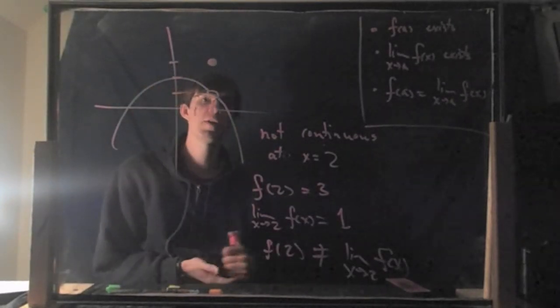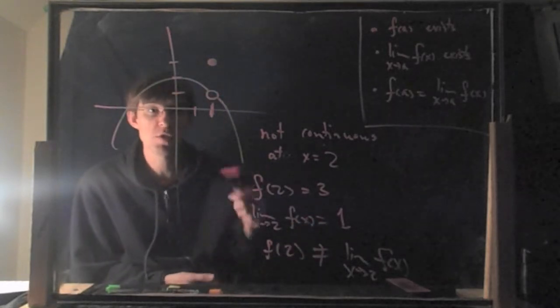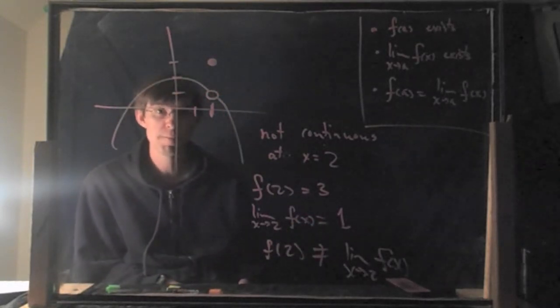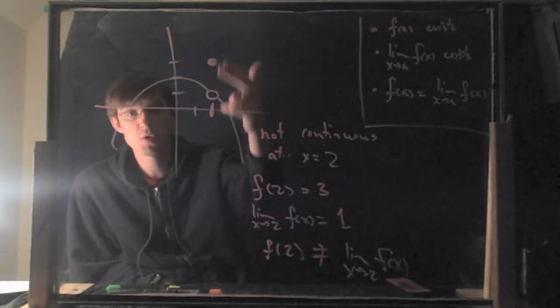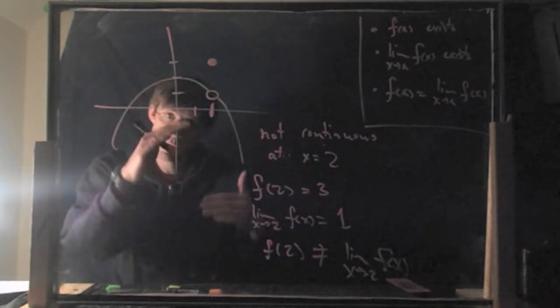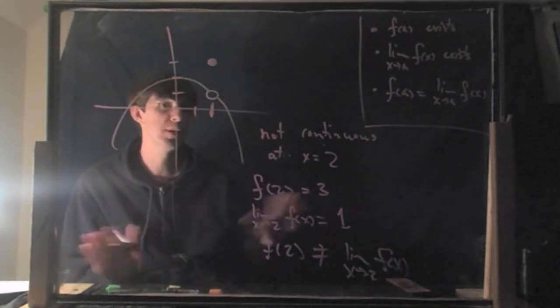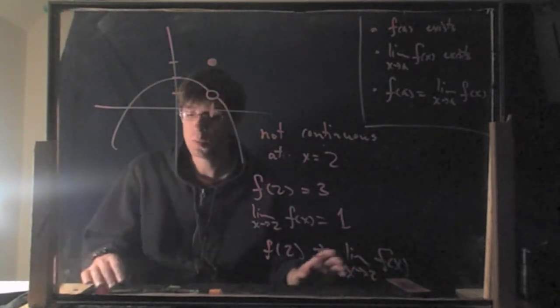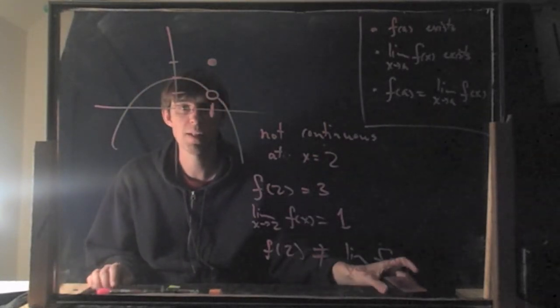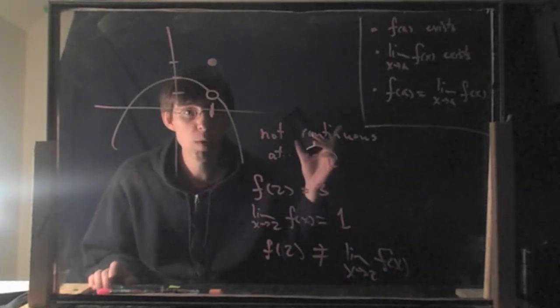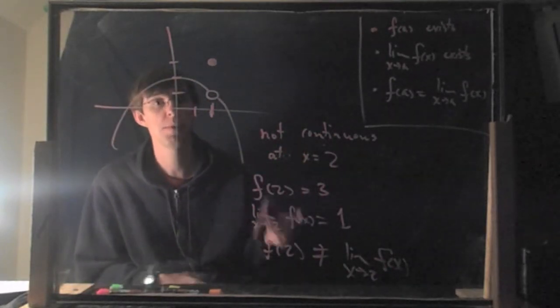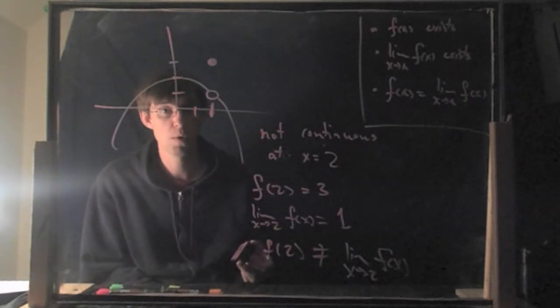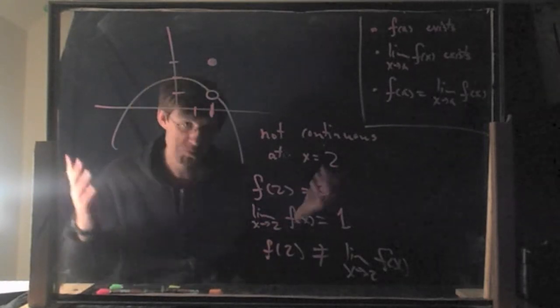It's pretty easy to tell by looking at a graph if it's continuous or not — you just look for the funny business. If you have any points not along the curve, or the curve is breaking apart at some point, it's not continuous there. Next, I want to talk about: what if I just show you the equation of something? Can you tell me where it's continuous just by looking at the equation?